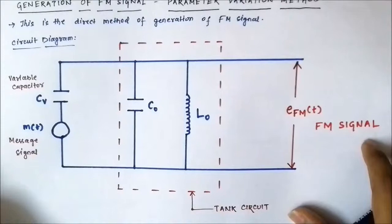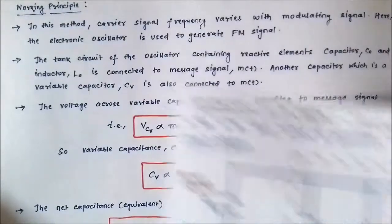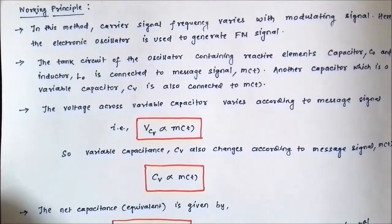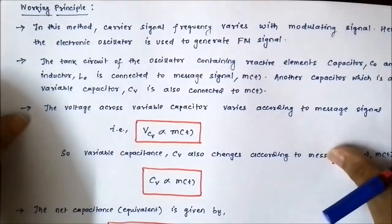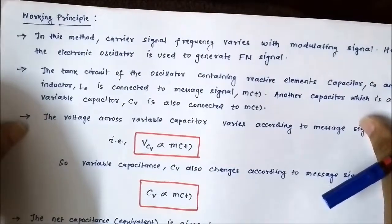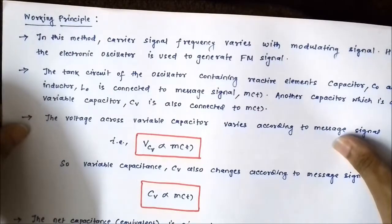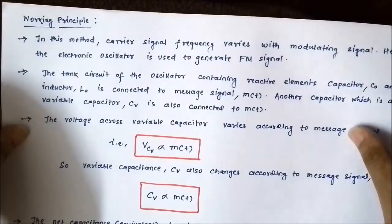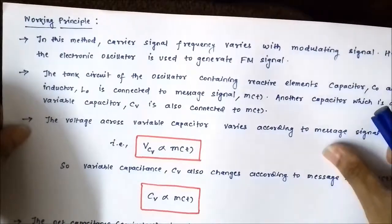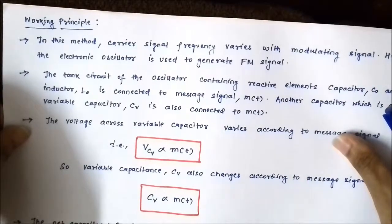The parameter variation method is based on the principle that the carrier signal frequency varies with the modulating signal — which is actually the principle of frequency modulation. The carrier signal frequency is varied proportionally to the message signal. The same happens in the parameter variation method, where the tank circuit consisting of inductor L0 and the two capacitors C0 and CV is used to generate the required frequency modulated signal.